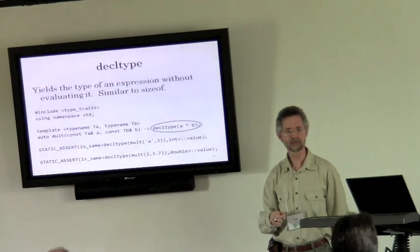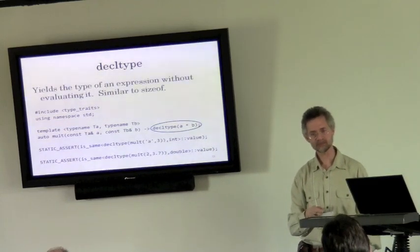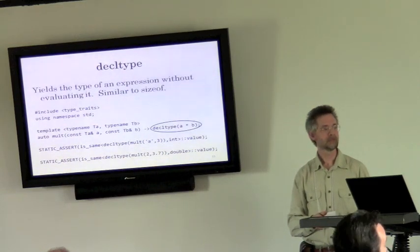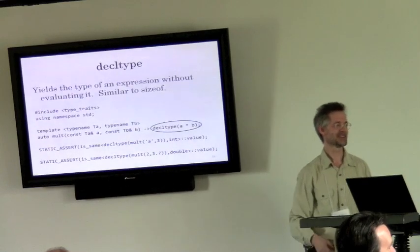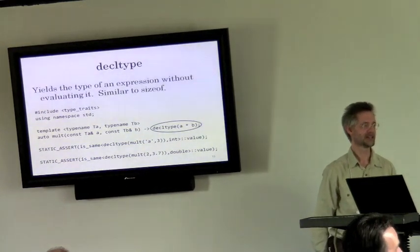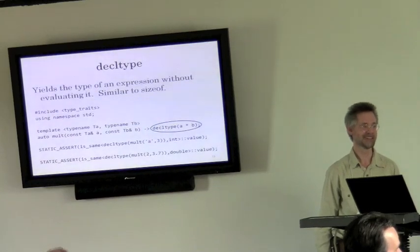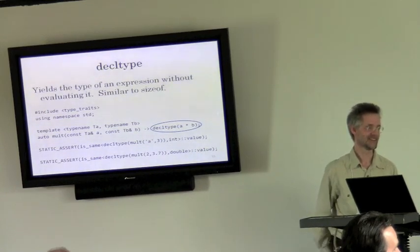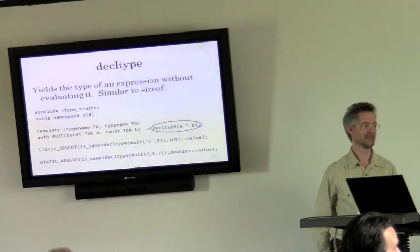Does anyone know why it's called this horrible name instead of 'typeof'? GCC already had a 'typeof' extension, even without underscores, and it doesn't mean the same thing. GCC representatives argued they didn't want to change 'typeof' and break customer code. So they came up with this new name. Same thing happened with unordered containers and forward_list.